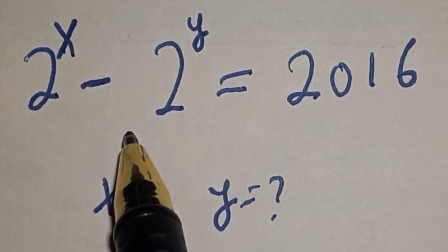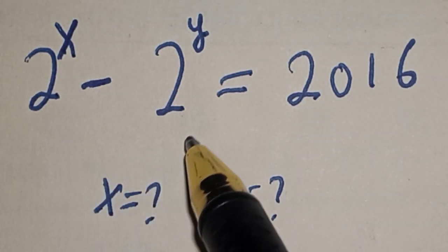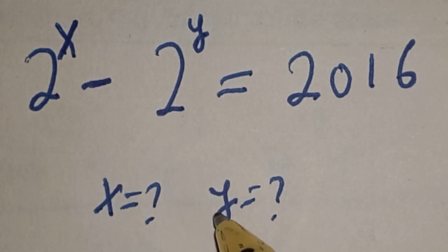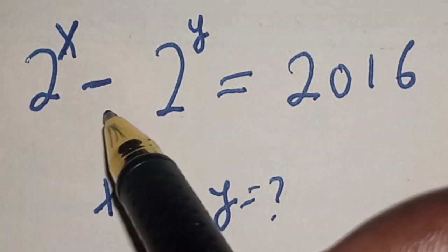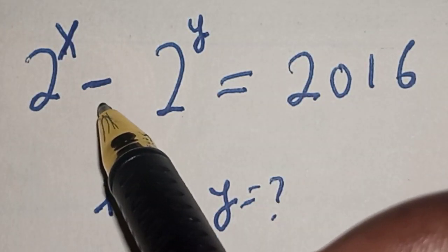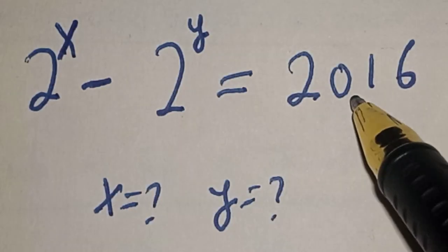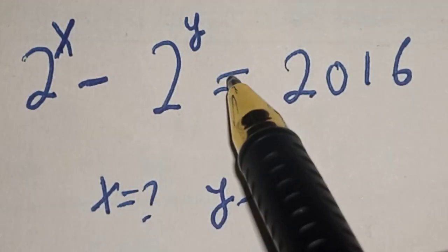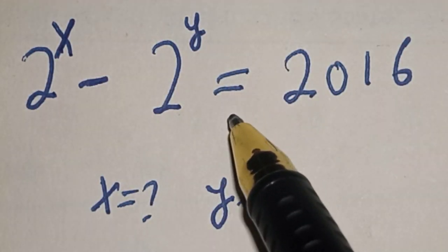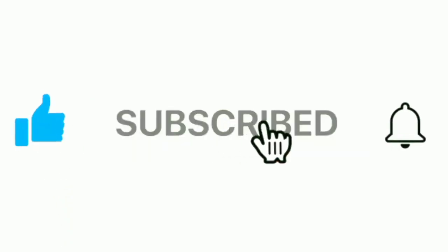Hello, welcome to Magist. In this class we want to find the value of X and the value of Y from the given equation: 2 raised to power X minus 2 raised to power Y is equal to 2016, where X and Y are positive integers. Before we move on, like, share, comment, and subscribe. Thank you.